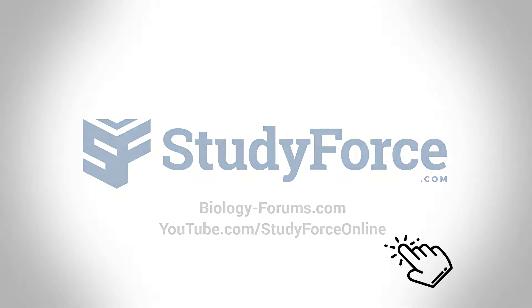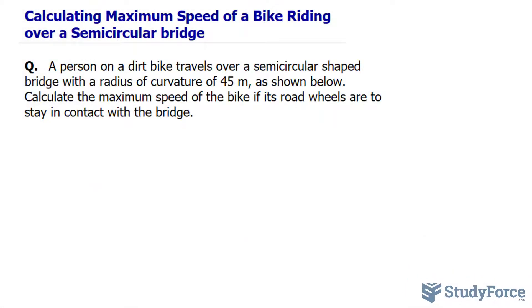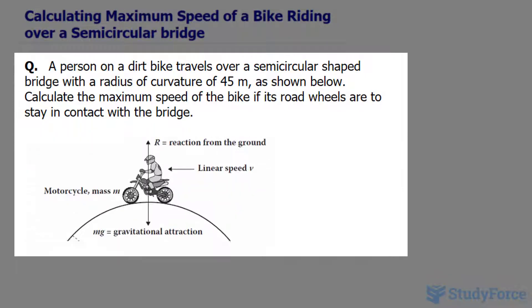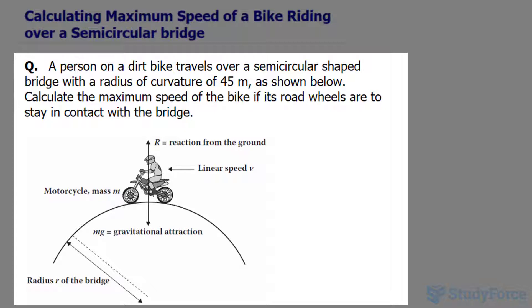In this lesson, I'll show you how to calculate the maximum speed of a bike riding over a semicircular bridge. The question reads: a person on a dirt bike travels over a semicircular shaped bridge with a radius of curvature of 45 meters, as shown below.